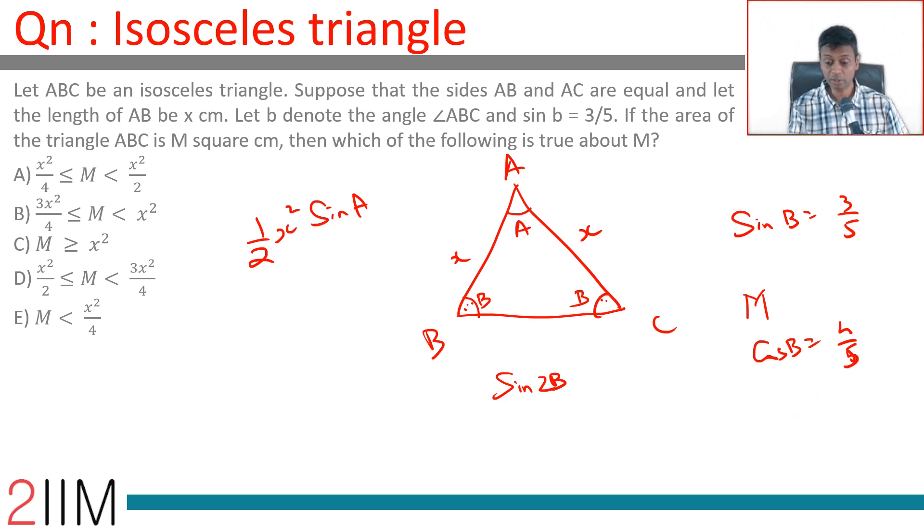Account for 2B and 2B, this angle A is 180 minus 2B. So we are looking at half X square sin of 180 minus 2B or half X square sin 2B.